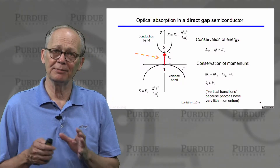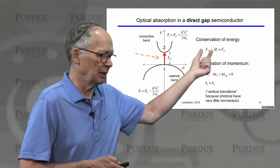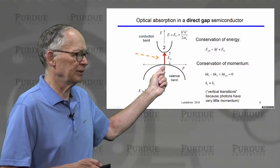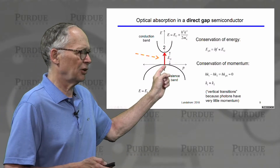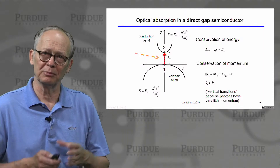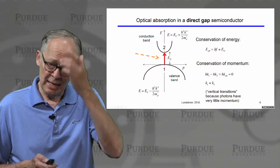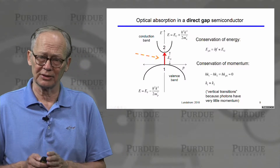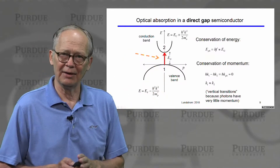That process must conserve energy and momentum. The energy comes from the photon itself. The initial momentum of the electron in the valence band is h-bar k1, and the final momentum in the conduction band is h-bar k2. Since this process occurs near k equals zero, there is really no difference in momentum before and after absorption — that small difference is accounted for by the photon's momentum, which is approximately zero. We refer to these as vertical transitions — there is essentially no change in the electron's crystal momentum during absorption.